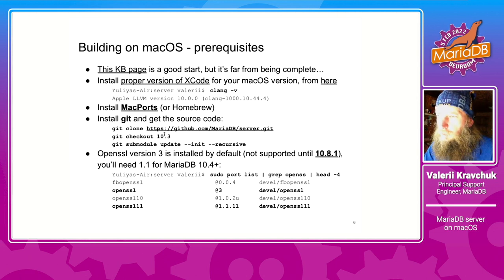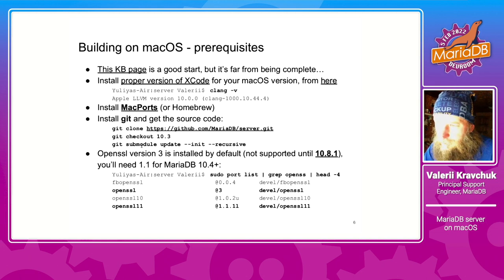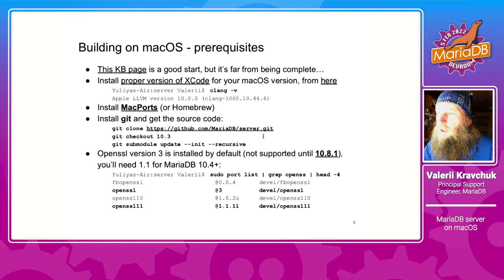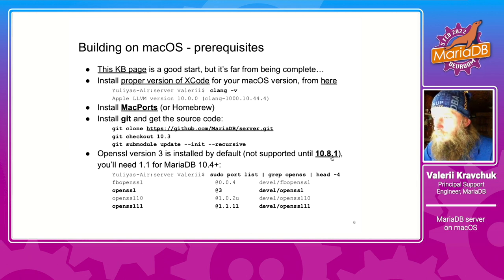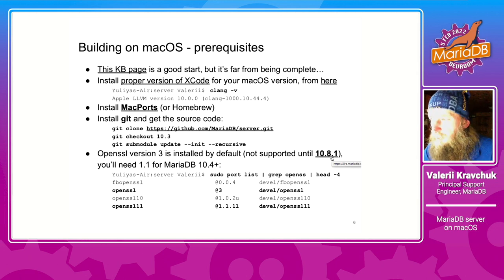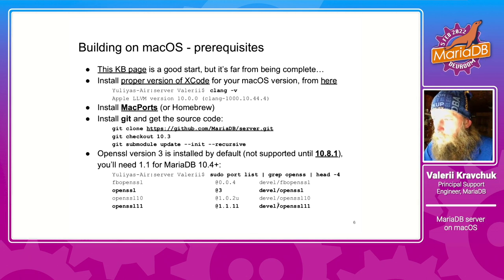With git already installed, you have to clone the source code. Remember that for MariaDB version 10.3 and newer there are some submodules, so make sure to update them before proceeding. I also found out the hard way that by default the OpenSSL version installed on my macOS is version 3, and it's not supported by MariaDB — at least not until recently, and it does not work properly in some cases. So you may have to install the supported version; OpenSSL 1.1 does work.